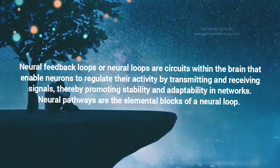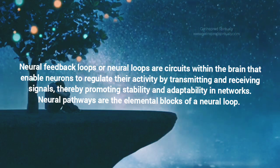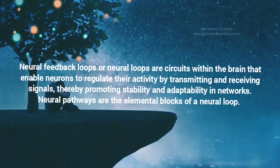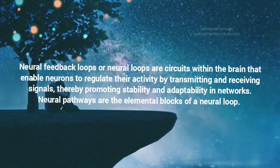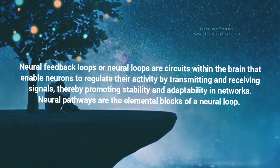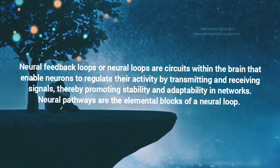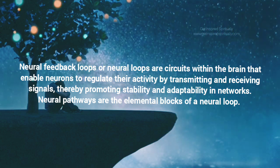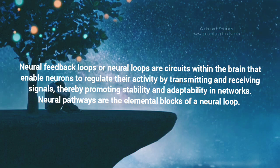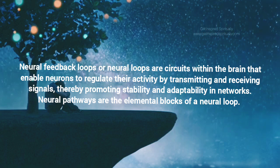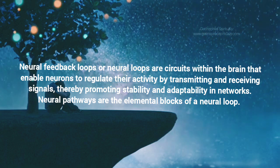Neural feedback loops, or neural loops, are circuits within the brain that enable neurons to regulate their activity by transmitting and receiving signals, thereby promoting stability and adaptability in networks. The fundamental building blocks of neural loops are called neural pathways.